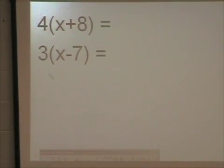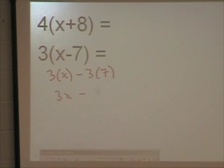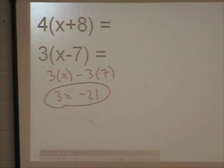Now, I've got 3 times x minus 3 times 7. 3 times x is 3x. Minus 3 times 7 is 21. And this is your final answer. Can I combine 3x minus 21? No, because they are not like terms.